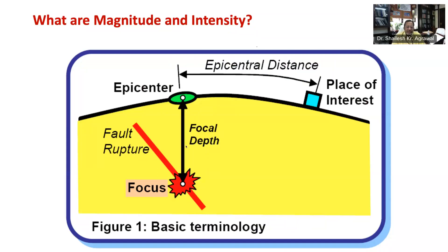The depth of focus from the epicenter is called focal depth. When an earthquake occurs, it is said to have occurred below the ground at a certain depth — this depth is the focal depth, and it is an important parameter for determining the damage potential of the earthquake. Generally, shallow focus earthquakes having a focal depth less than 70 kilometers have more damaging potential.